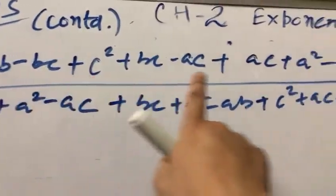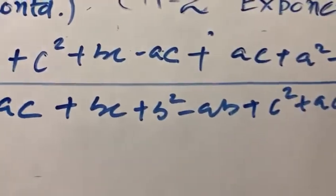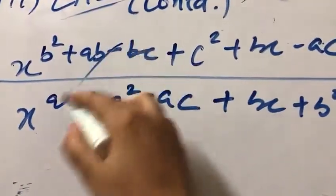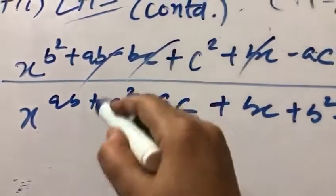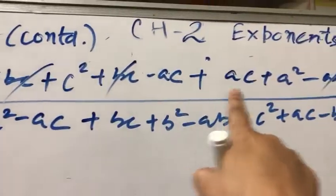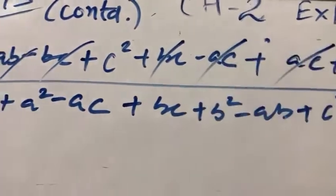See it is plus AB and in the last we have minus AB, so AB and AB are cancelled. Then minus BC and plus BC, so BC and BC are cancelled. Then minus AC and plus AC, so AC and AC are cancelled.